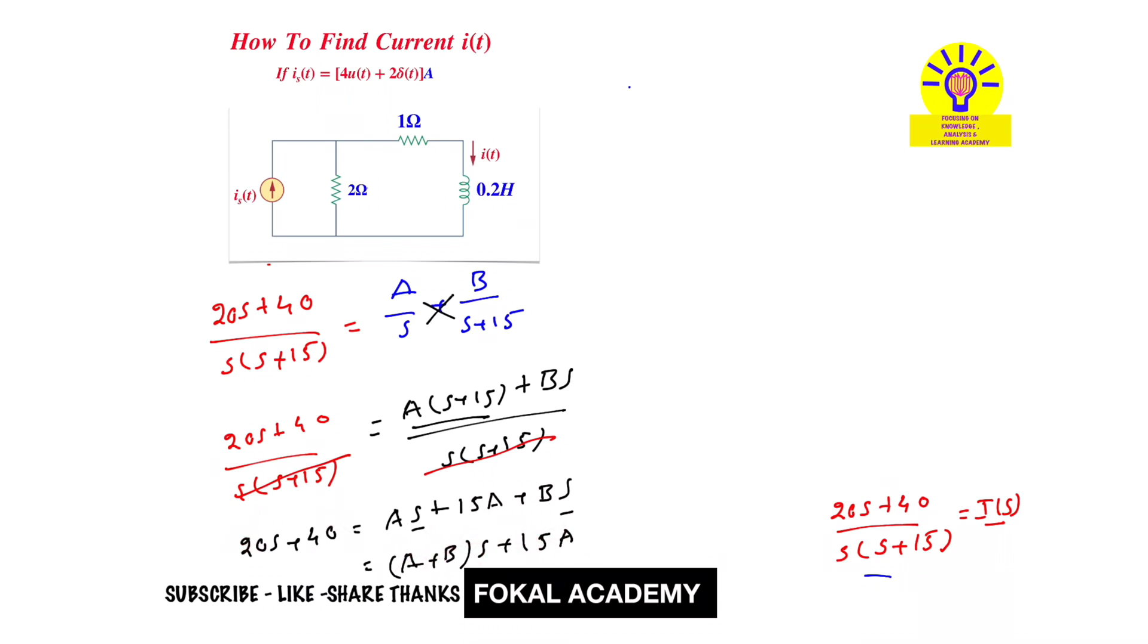From this, 15 A equal to 40, so from this you get A equal to 40 by 15. Similarly, A plus B equal to 20. A already got, substitute this value in the equation, that is 40 by 15 plus B equal to 20. So from this we get B equal to 52 by 3.